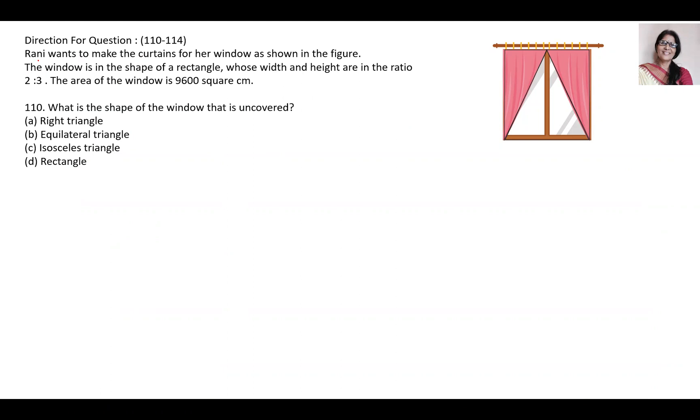For one question, there are five subparts. Rani wants to make a curtain for her window as shown in the figure. The window is in shape of a rectangle whose width and height are in ratio 2 to 3. The area of the window is 9600 square centimeters.